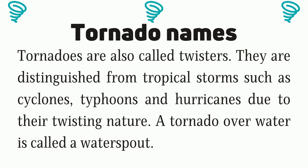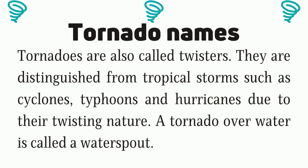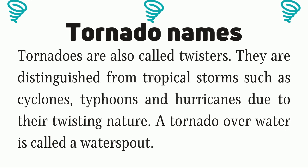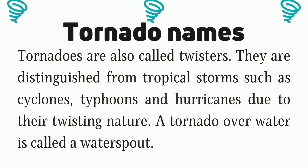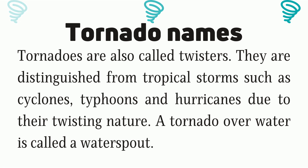Tornadoes are also called twisters. They are distinguished from tropical storms such as cyclones, typhoons, and hurricanes due to their twisting nature. A tornado over water is called a waterspout.